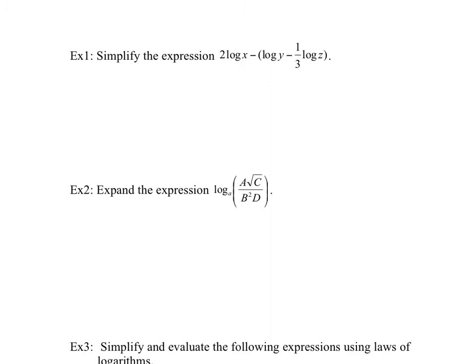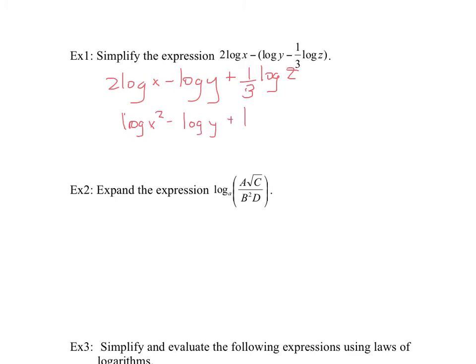Here's an example — simplify this expression using the four log laws. First, expand the negative into the brackets: we get 2 log x minus log y, then plus one third log z. Now using the power rule, bring the 2 as an exponent of x and one third as an exponent of z, giving: log x squared minus log y plus log z to the power of one third.